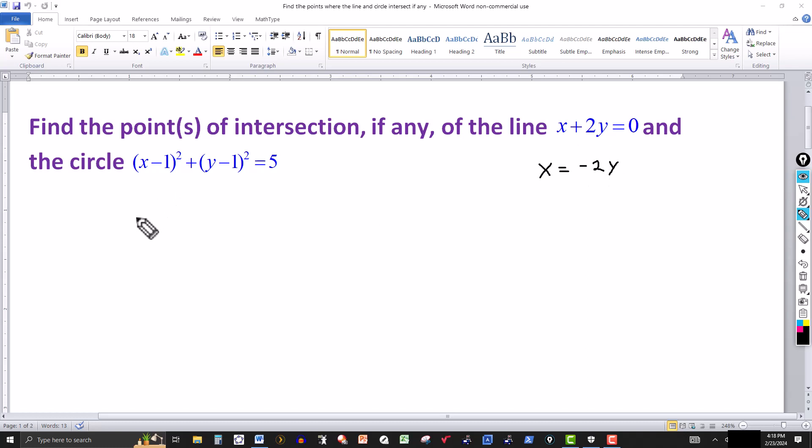And then in the second equation, I'm going to replace the x by minus 2y. So in the first parenthesis, I got minus 2y for x minus 1, and then quantity squared. And in the second one, I just leave it.